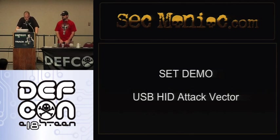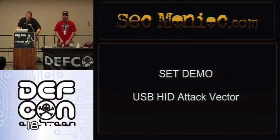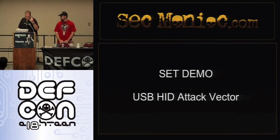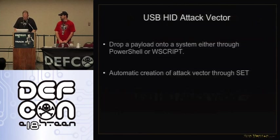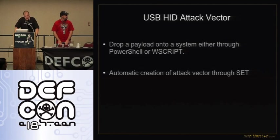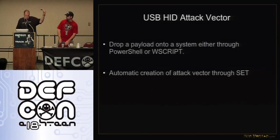As soon as you plug it in, it simulates keystrokes at 140 to 280 characters per second — actually a lot more than that. It will execute a payload on the system. We're only restricted by how fast the buffer is. You can drop a payload via PowerShell or WScript — those are the two main methods. SET automatically creates the attack vector for you, creates the PDE file which you load into the Arduino IDE, and it will compromise the computer for you.